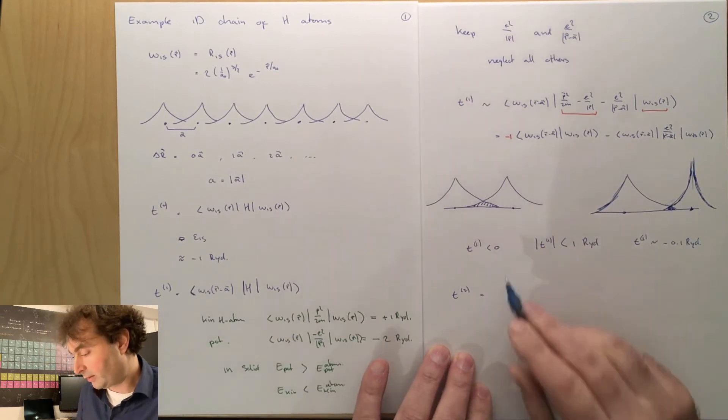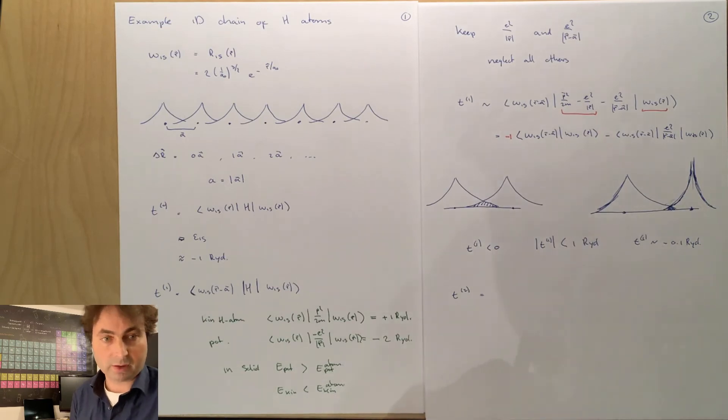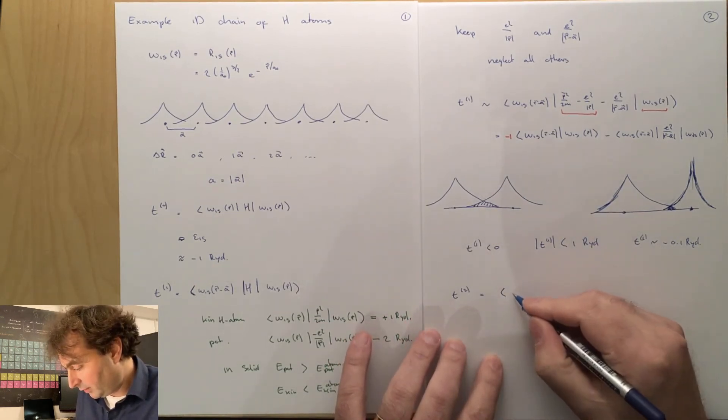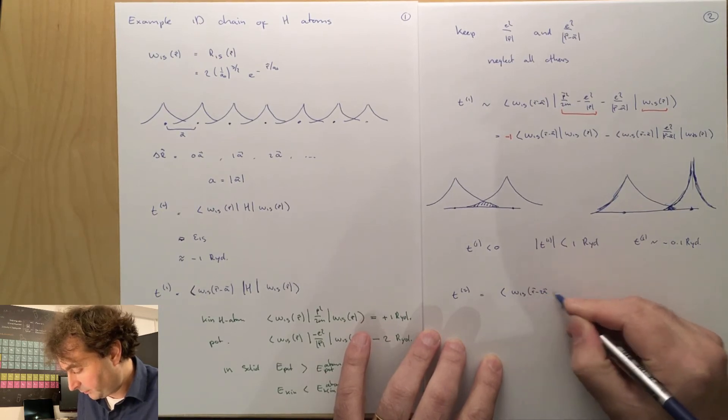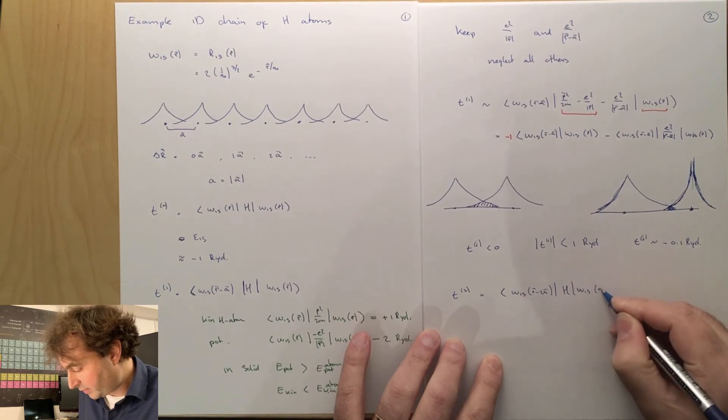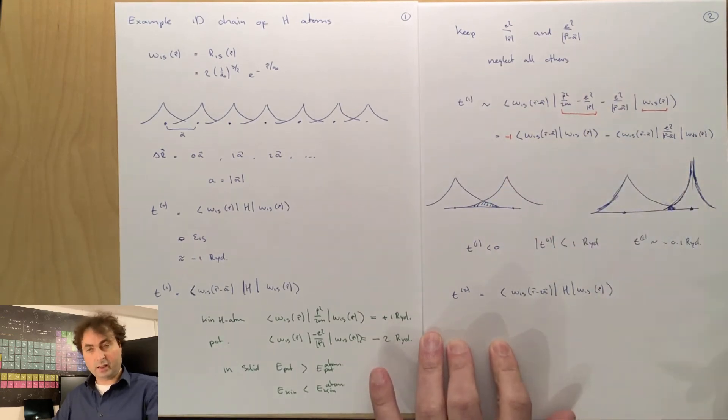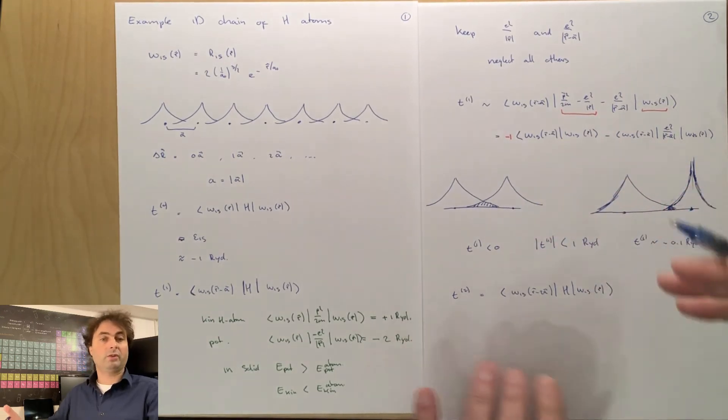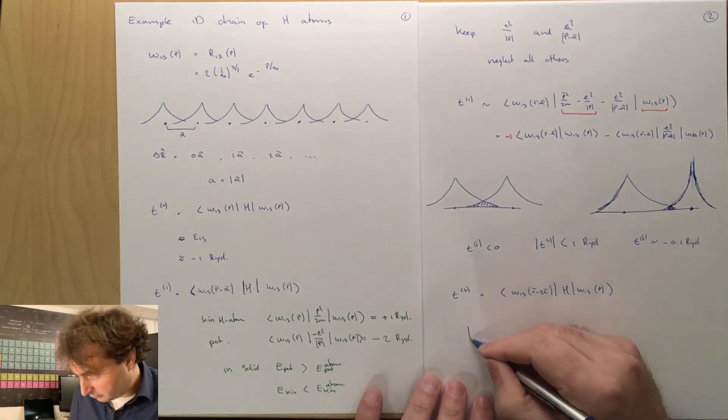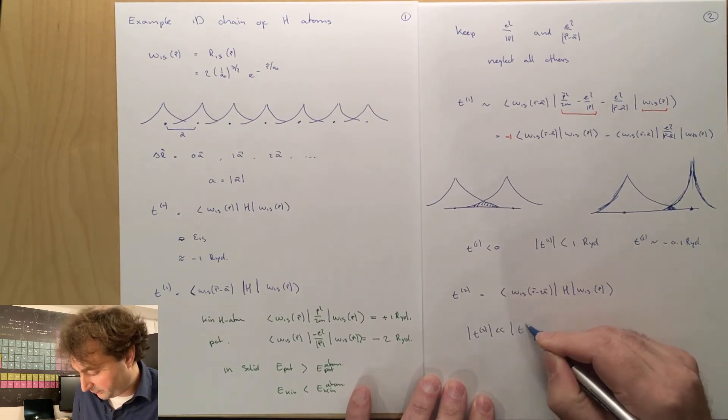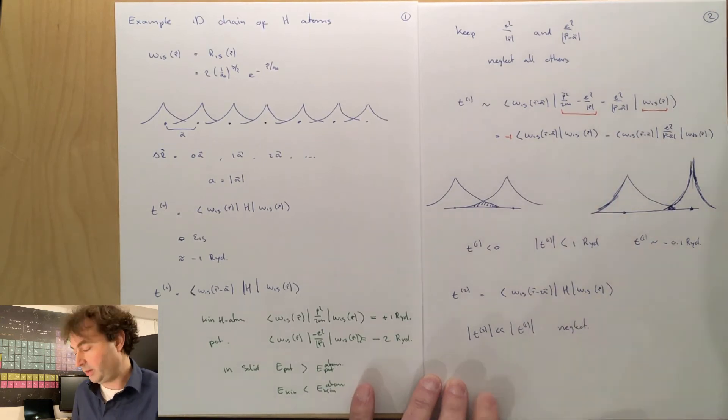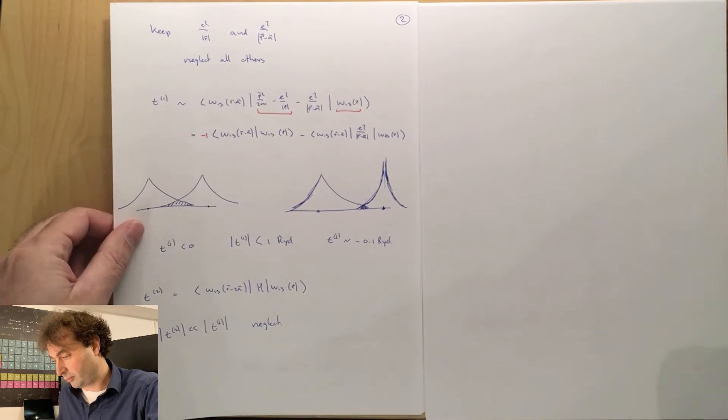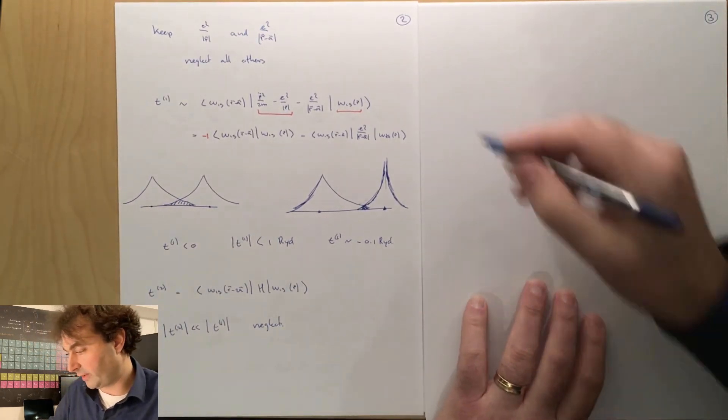T2, and between two S electrons it is negative. And that's very important because that will allow us to conclude that we get electron bands and that you can get free electron-like bands. T2 is omega 1S R minus 2A, Hamiltonian, omega 1S R. Now our wave function is exponentially decaying. When T1 is already a factor of 10 smaller than the on-site energy, then T2 is even more than that smaller than T1. So we can state that T2 is going to be much smaller than T1, and for our model that we have here we can neglect it. We'll get back to longer range hoppings later in this lecture.